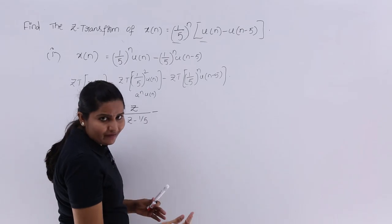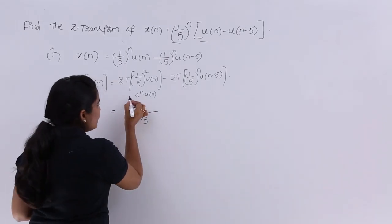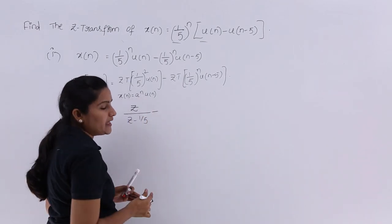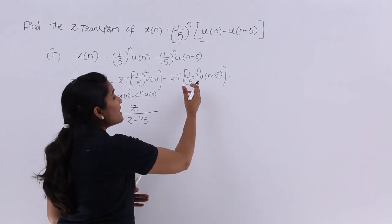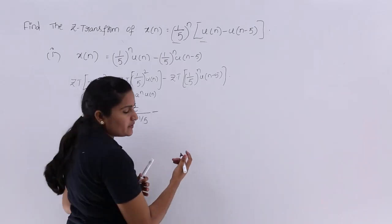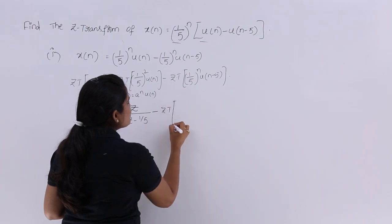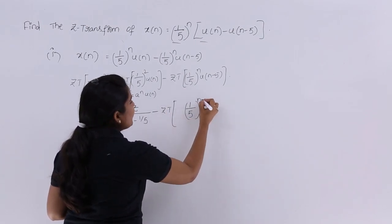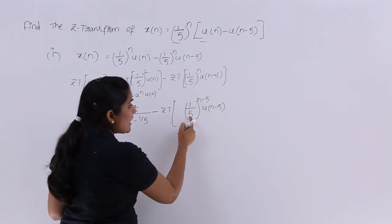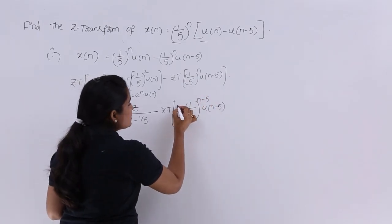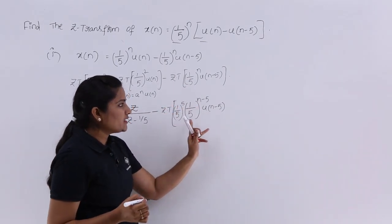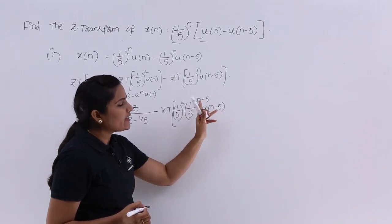We can apply the time shifting property, but notice that the shift is only on u(n-5), not on (1/5)^n. If x(n) = a^n · u(n), then x(n-k) = a^(n-k) · u(n-k). Since (1/5)^n does not have that shifting, I need to create it. So I write (1/5)^(n-5) · u(n-5) and multiply by (1/5)^5 to compensate, so that the product equals (1/5)^n · u(n-5).